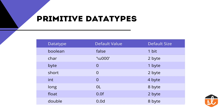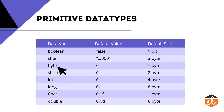Let's discuss the primitive data types at a glance. This is the tabular representation of the eight primitive data types, their default values, and their default sizes. For boolean, it stores only two values — true and false — the default value is false, and the default size is 1 bit. For character, the default size is 2 bytes. For numerical values, you can use byte, short, int, or long.